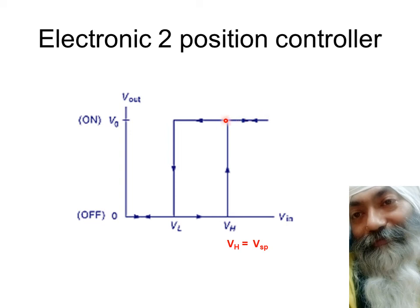As in case of AC, it doesn't turn off at VL. It turns off at VL. And this VL is not equal to VH but rather VL is given by VSP minus. This term can always be adjusted by adjusting R2.